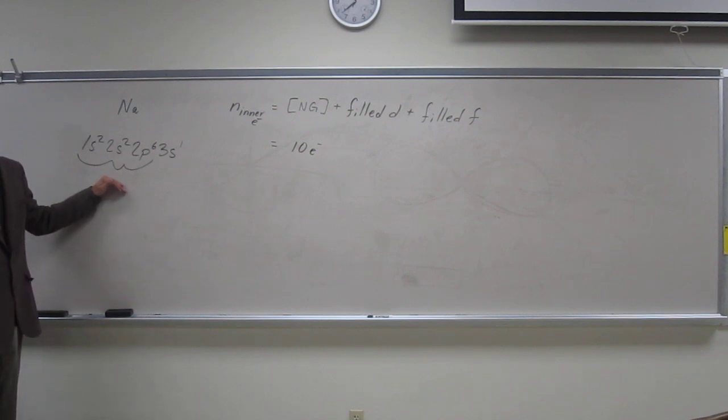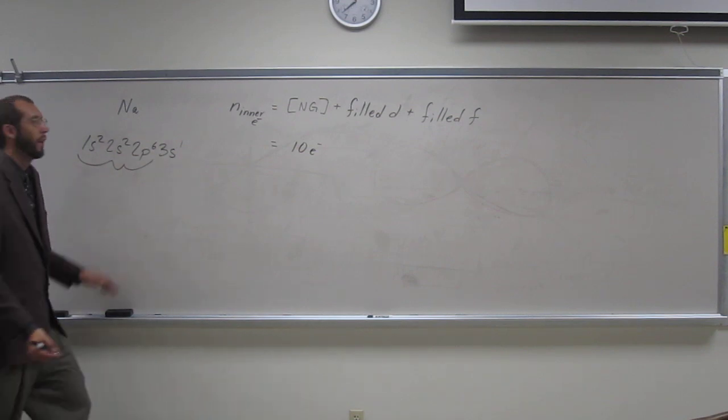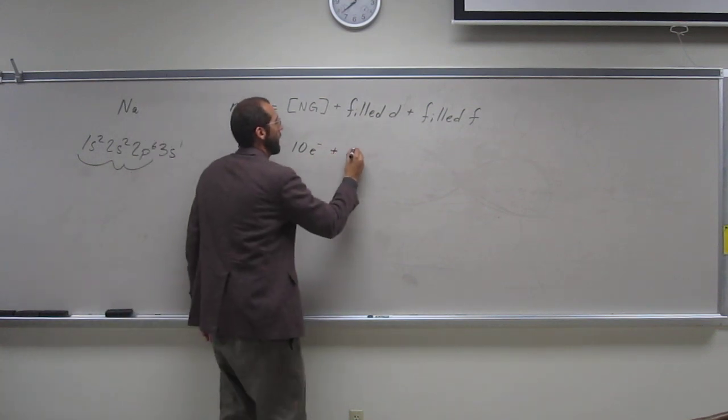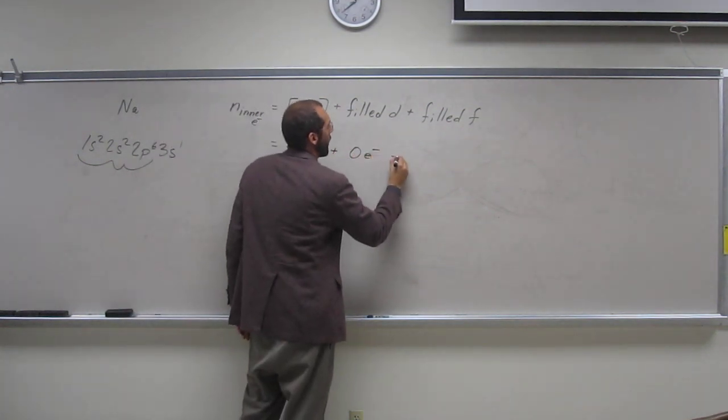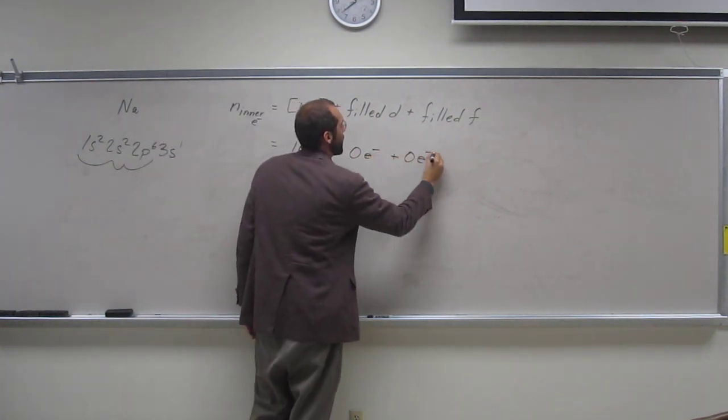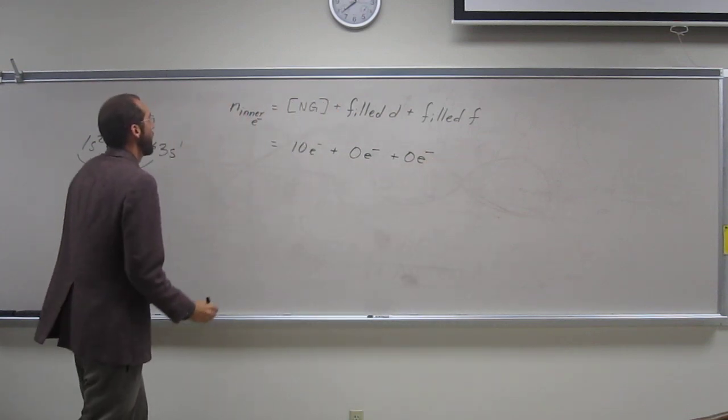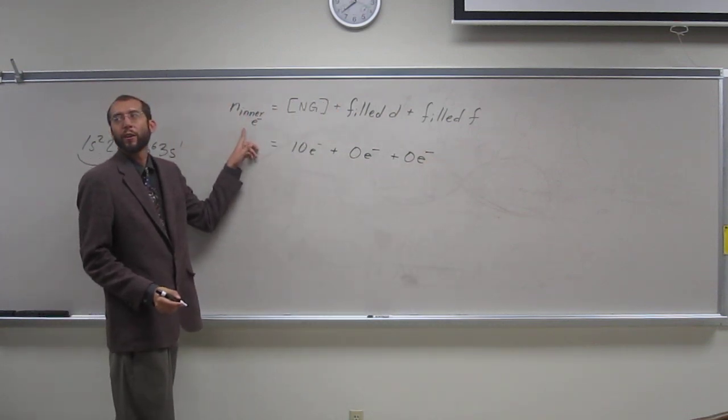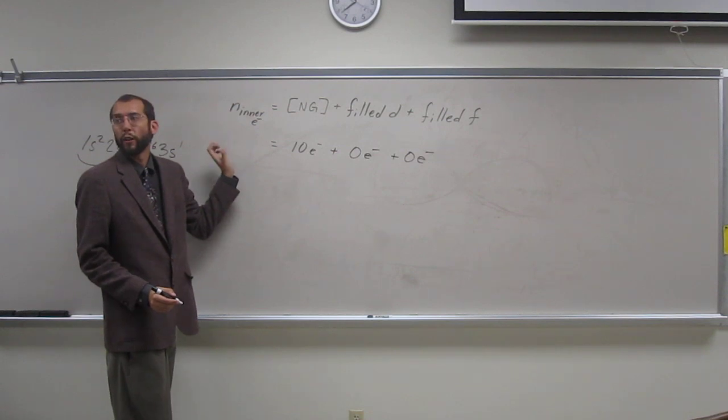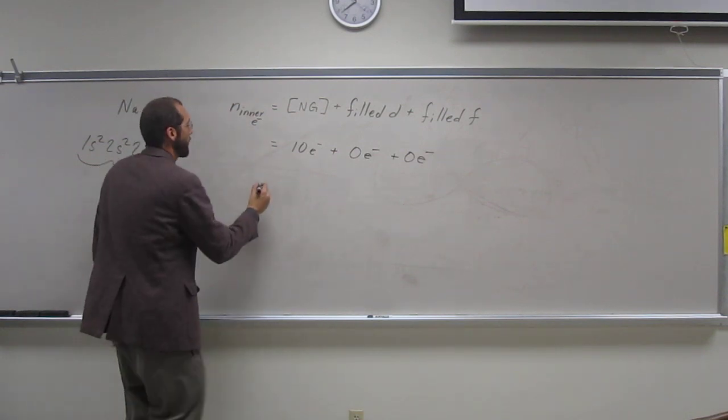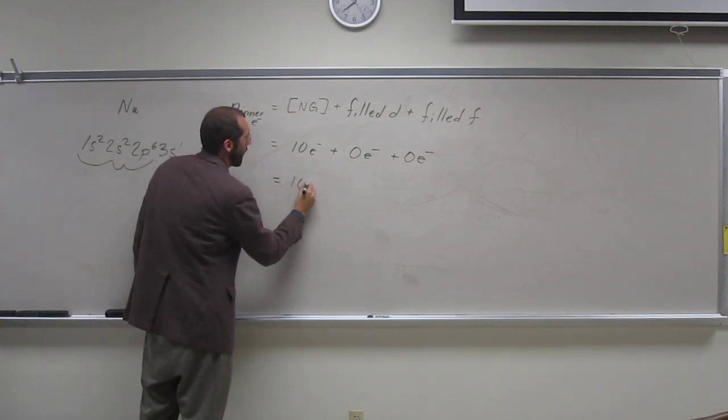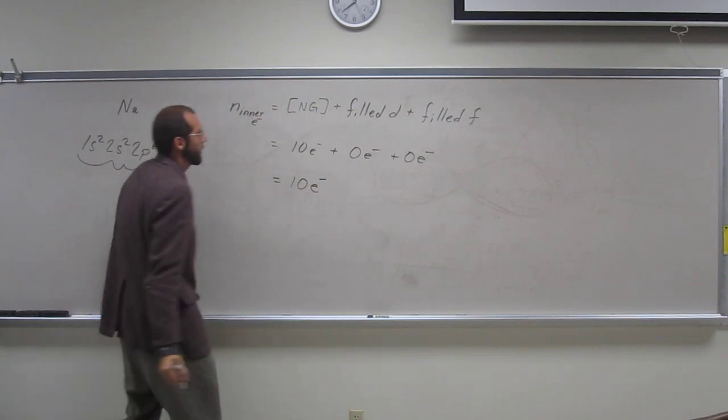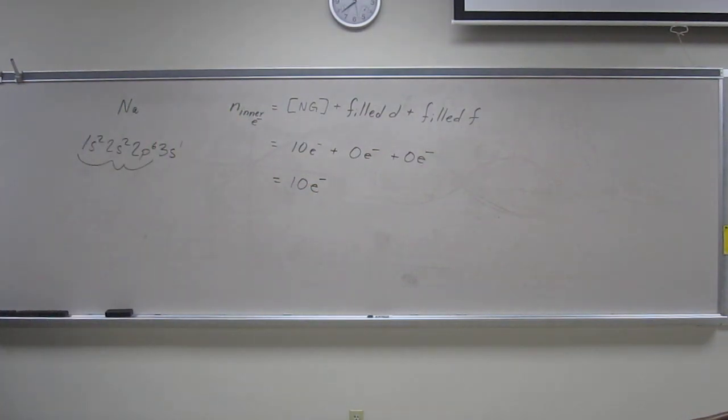Do you guys see any D orbitals up there? Any F orbitals? So, plus 0 electrons, plus 0 electrons. Another name for these inner electrons you might see is core electrons. The number of core or inner electrons in the sodium atom is 10 electrons. Is everybody okay with that?